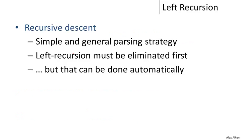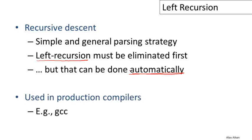To summarize recursive descent parsing: it is a simple and general parsing strategy — you can parse any context-free grammar using recursive descent. It cannot work with left recursive grammars, so you must eliminate left recursion. In principle this can be done automatically, but in practice people eliminate left recursion by hand because they need to know the grammar form in order to write semantic actions. Recursive descent is popular in practice; many production compilers with complicated grammars use it because it is so general. For example, GCC's front end is a handwritten recursive descent parser.